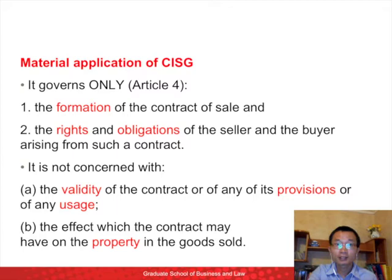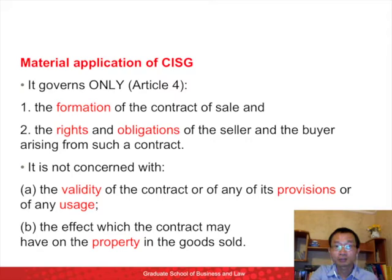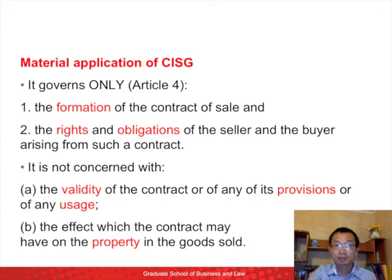At the same time, the Convention clearly states that it is not concerned with: (a) the validity of the contract or of any of its provisions or of any usage; (b) the effect which the contract may have on the property in the goods sold. In some countries, some kinds of contracts may need approval by the authorities to be valid. Such a validity issue is not governed by the Convention, neither are its provisions or any usage.